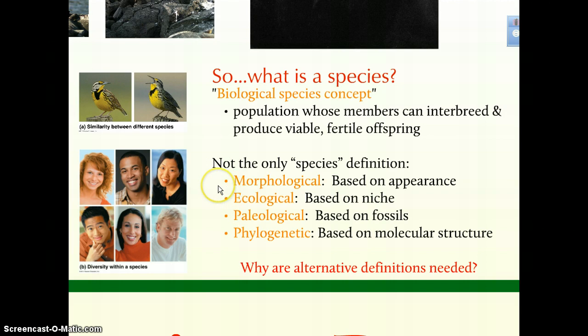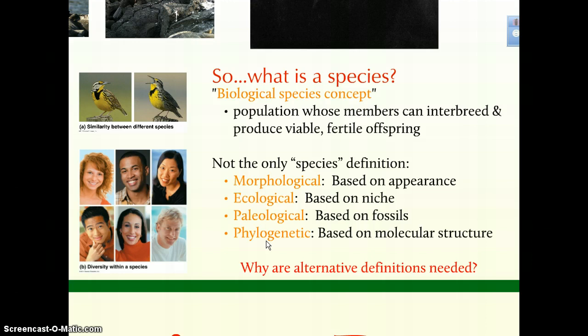Some definitions confirm or support one another. The biological definition may confirm morphological definitions of species. We can also look at phylogenetic definitions, where we examine DNA or proteins and look at similarities between species. In many cases, these definitions corroborate one another.